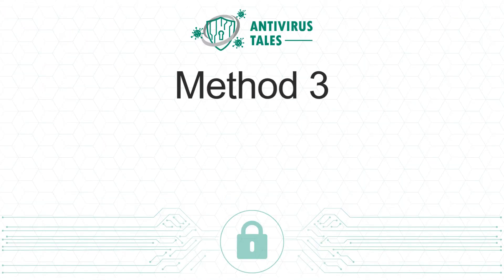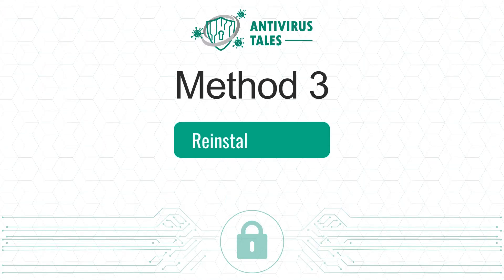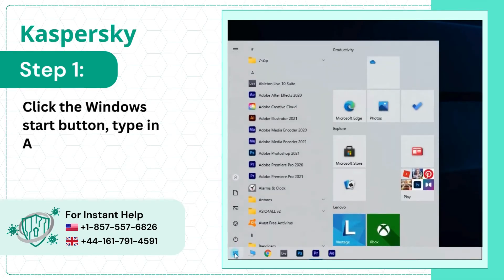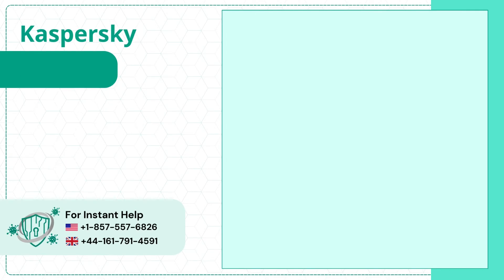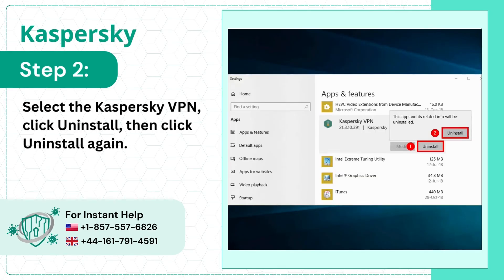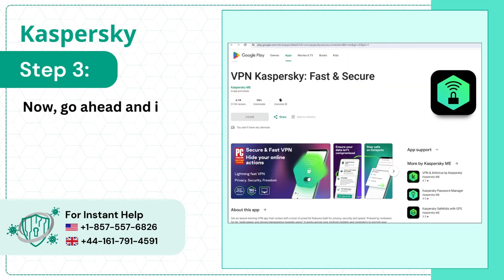Method 3: Reinstall the VPN. Step 1: Click the Windows Start button, type in Apps and Features, and open it. Step 2: Select the Kaspersky VPN, click Uninstall, then click Uninstall again. Step 3: Now go ahead and install the Kaspersky VPN again.